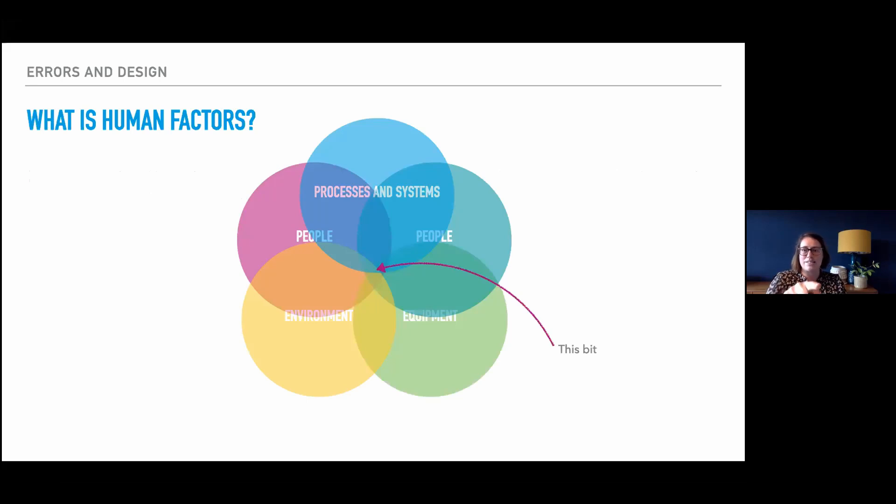Fundamentally, human factors is about that little bit right in the middle there, where all of those things come together. This is where I talk about the complexity and the reality of how systems are used, which is what I find really interesting. We don't try and simplify things too much, although we do study things in a scientific way. We accept the complexity of the world as it is, and try and work with that. We're very much about the reality, the lived experience, the operator's perspective on using the system, and looking at how all of that comes together to support well-being and performance.